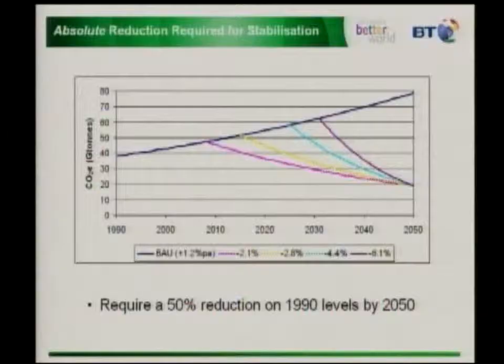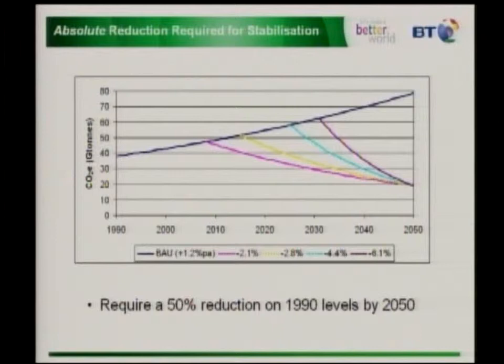This slide, which unfortunately aligns very well with the slides John showed earlier, demonstrates the carbon emissions of the globe. The blue line shows the carbon emissions of the globe if no action is taken, anticipated to rise from the 1990 level of 40 gigatons, doubling by 2050 to 80 gigatons.